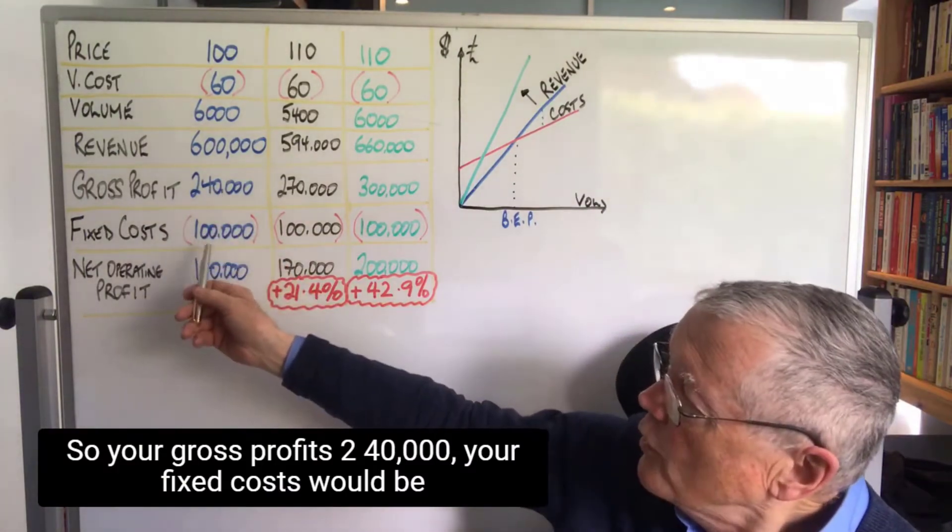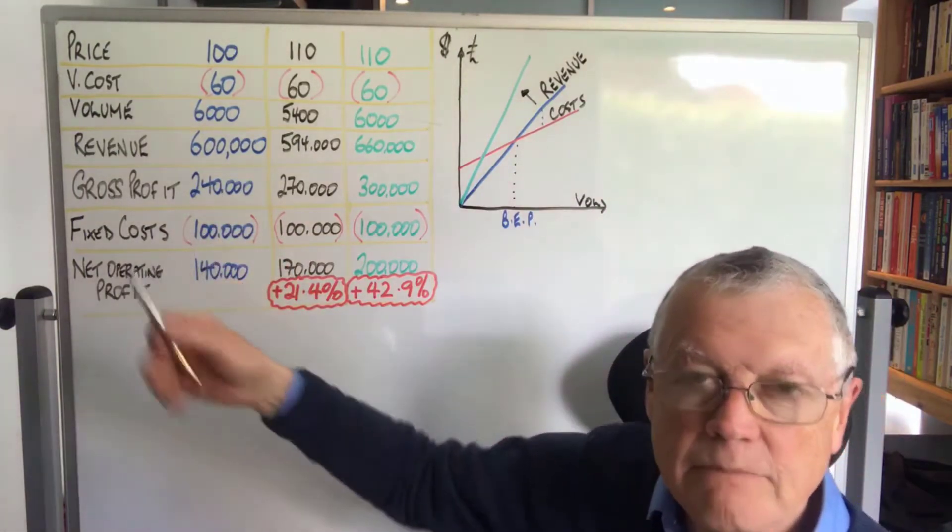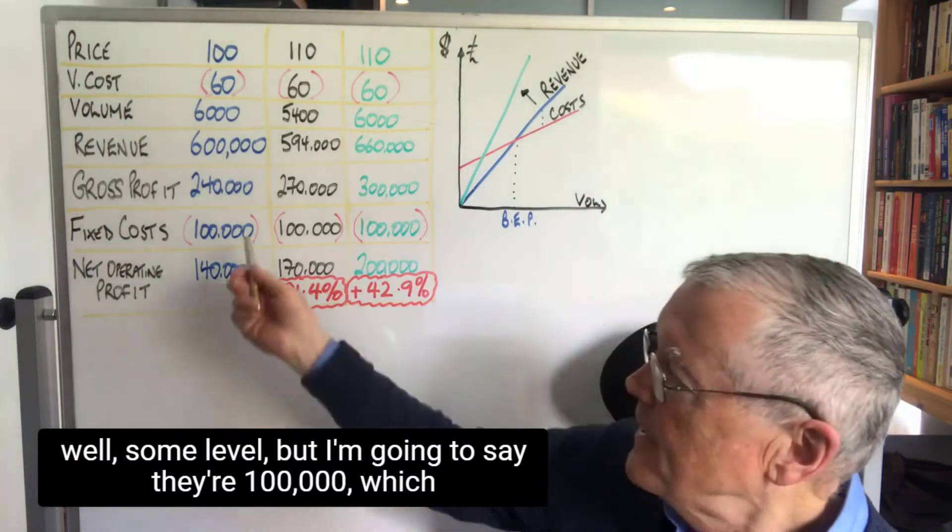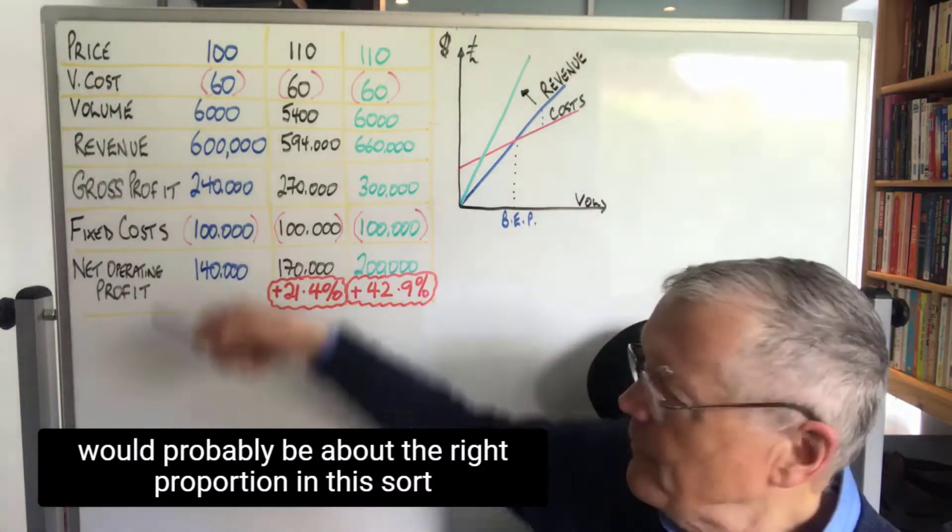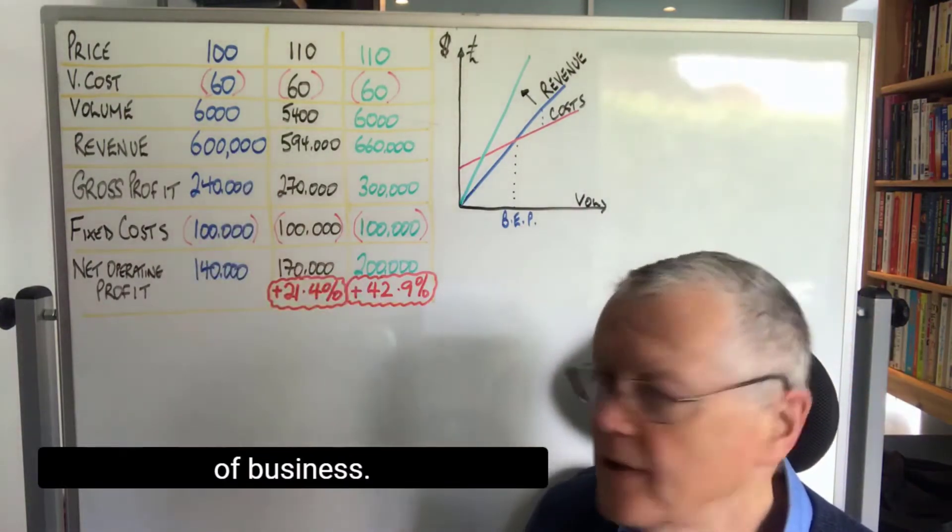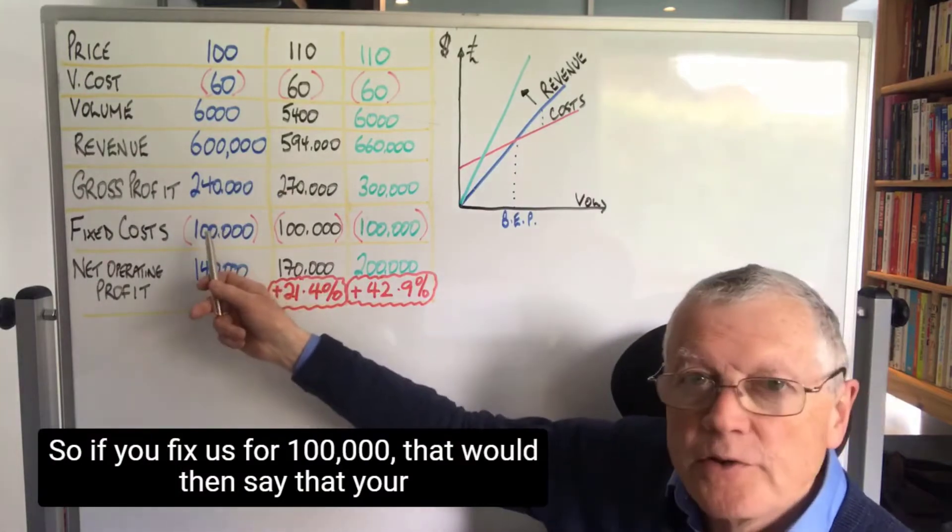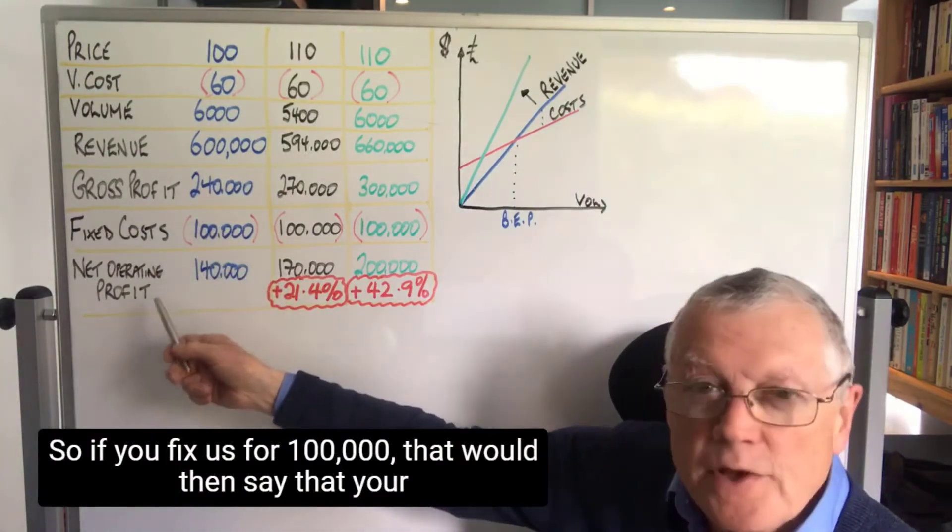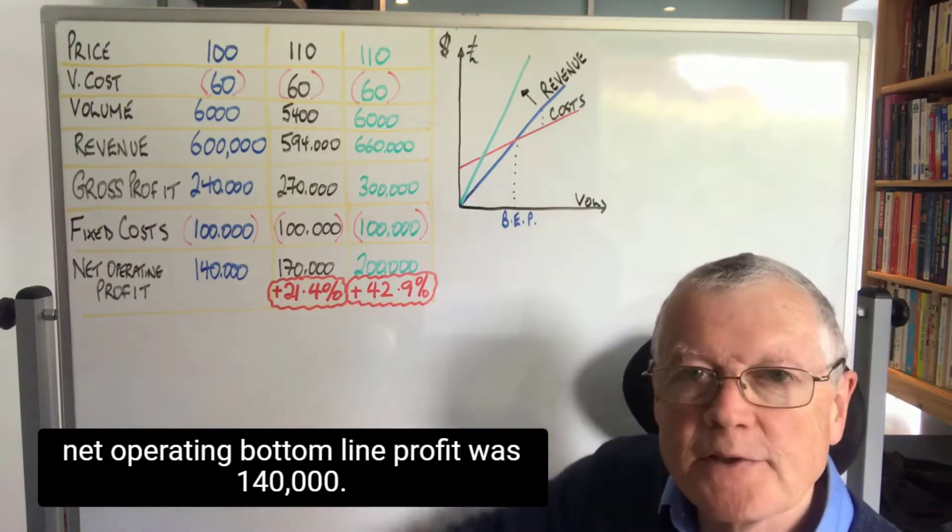Your fixed costs would be some level, but I'm going to say they're 100,000, which would probably be about the right proportion in this sort of business. So if your fixed costs are 100,000, that would mean your net operating bottom line profit was 140,000.